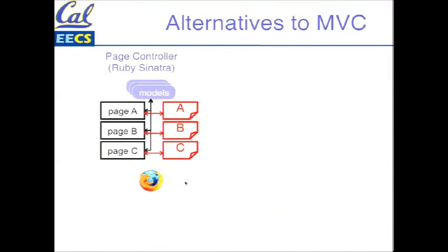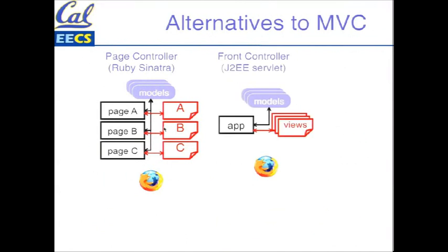Another alternative, if you've done J2EE servlet programming, is called the front controller. There's one thing that receives every single incoming request and has to figure out how to dispatch it — it can talk to a bunch of models and has to figure out which page views are going to be generated. The gross structure is there's one place in the code where you look to see what happens when a URI comes in.